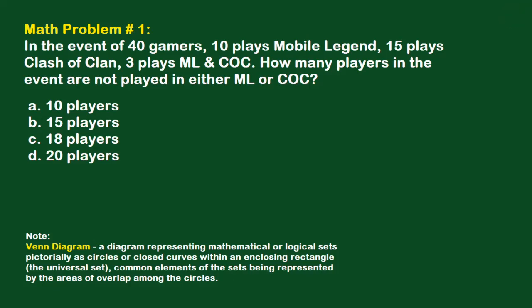In solving this kind of problem, we need to know about the Venn diagram. A Venn diagram is a diagram representing mathematical or logical sets pictorially as circles or closed curves within an enclosing rectangle, which is called the universal set. Common elements of the sets are represented by the areas of overlap among the circles.